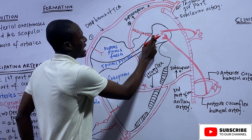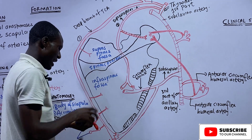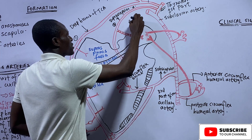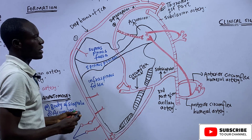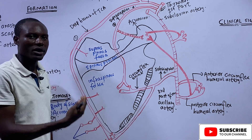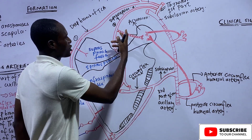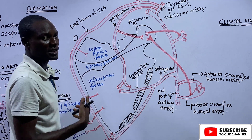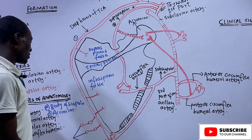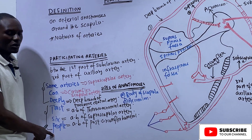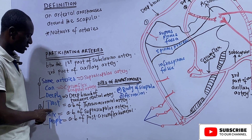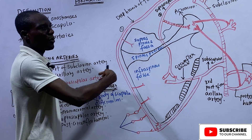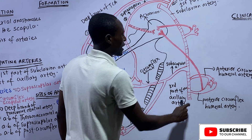That is the anastomosis around the body of the scapula: three arteries — the suprascapular artery, the circumflex branch of the subscapular artery, and the deep branch of the transverse cervical artery. Now, the remaining three arteries anastomose around the acromion — the expanded projection from the lateral aspect of the spine of the scapula. These give acromial branches, coming from the suprascapular artery, the posterior circumflex humeral artery, and the thoracoacromial artery.